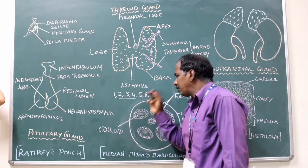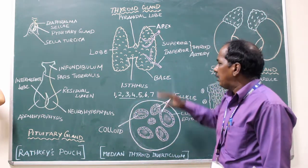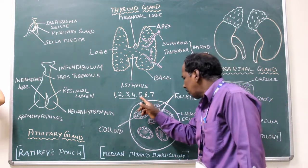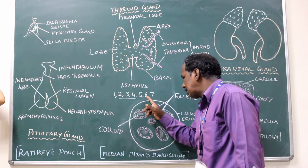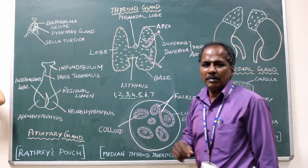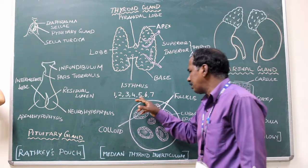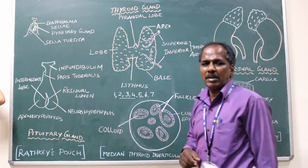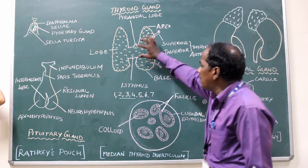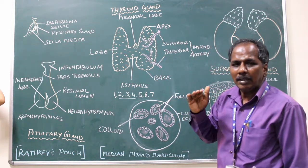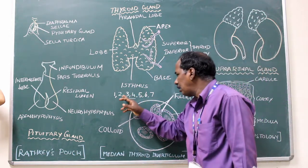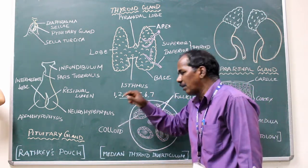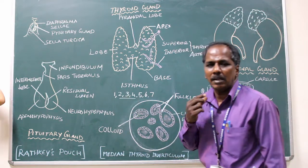Here is an easy way to remember the situation. The thyroid gland is situated at the level of C5, C6, C7 and the 1st thoracic vertebra — that is from the 5th cervical, 6th cervical, 7th cervical and 1st thoracic vertebra. Whereas the isthmus is present at the level of the 2nd, 3rd and 4th tracheal rings.